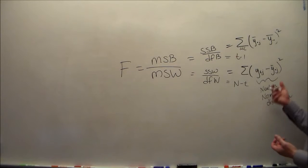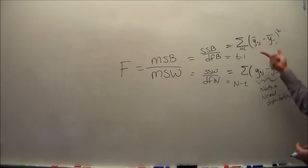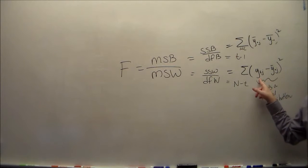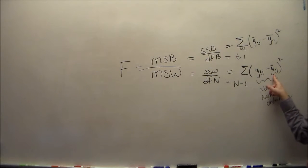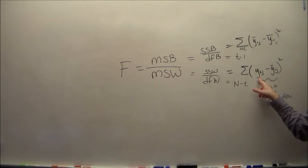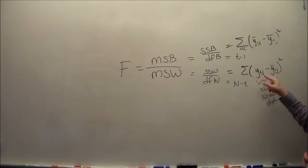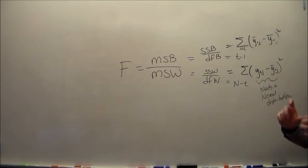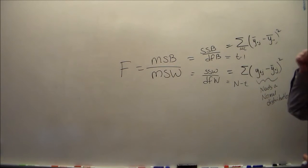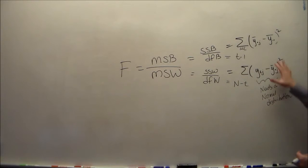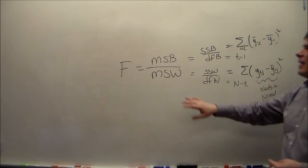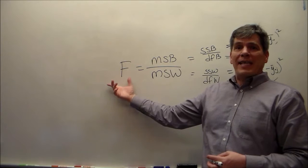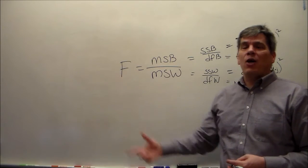That part in parentheses has a normal distribution — both this part and this part — if the y's have a normal distribution, then the y-bars have a normal distribution. We know the y-bars have a normal distribution if the y's have a normal distribution. So it all goes back to those y's needing a normal distribution. It's the y's within each group. So if this is normally distributed, these will be chi-squared, this will be F, and our F test statistic will be meaningful.